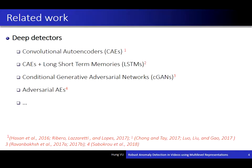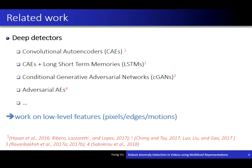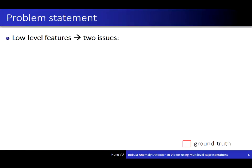There are many deep detectors to detect anomaly objects in video. They are mainly based on convolutional autoencoders or conditional generative adversarial networks, and most of them work on low-level features, for example visual edges or motion. Low-level features have two main issues.